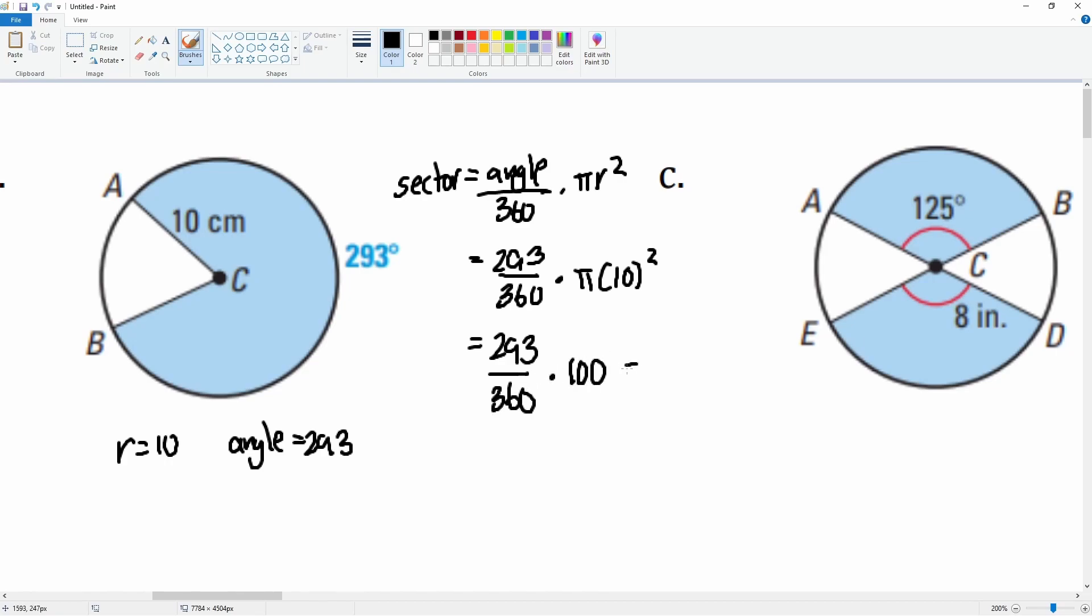I'm not going to simplify the fraction quite yet, so it's 293 over 360 times 100 pi. Now I'm going to enter this multiplication but leave pi alone, so I'm going to enter 293 divided by 360 times 100. I get roughly 81.39 pi for the sector, or if I want to include pi I multiply by pi and get 255.7 centimeter squared.